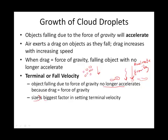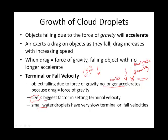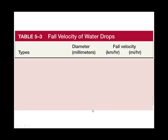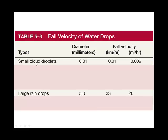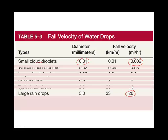Size is the biggest factor. Smaller water droplets will travel more slowly, and larger water droplets will travel faster as they fall toward the earth — their terminal velocity will be higher. For example, a small cloud droplet of about 0.01 millimeters has a terminal velocity of just 0.006 miles per hour, while large raindrops can reach 20 miles per hour. That's a significant difference, and it has consequences.